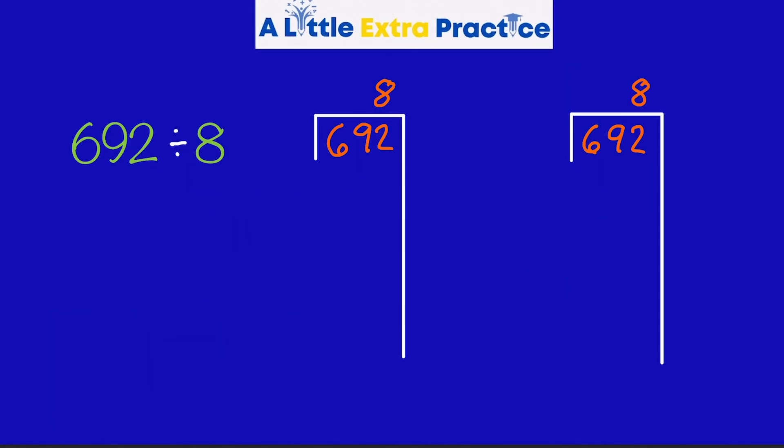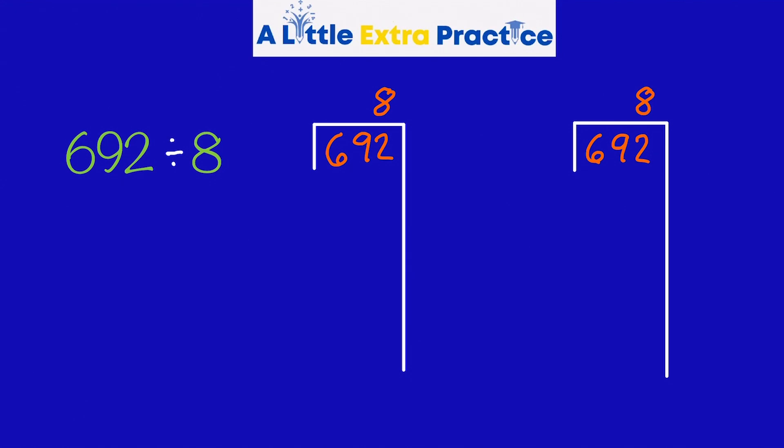692 divided by 8. I'm going to demonstrate by solving it twice that the work can look different, but we're still going to get the same answer. So, you don't have to worry if you are getting different numbers along the side than I am. We're both going to end up with the same quotient. This time I'm going to kind of be easy on myself and just do familiar facts. 8 times 5 is 40. Add the 0 to make sure that it's 400.